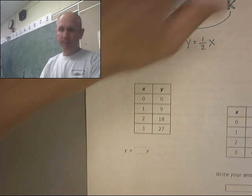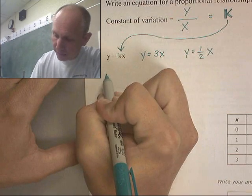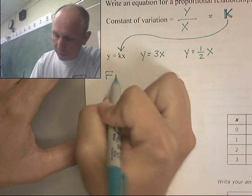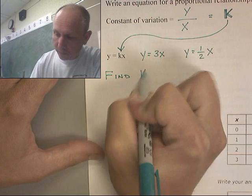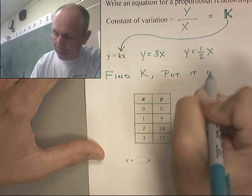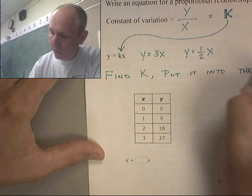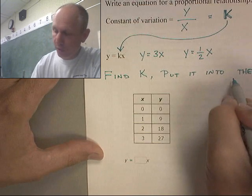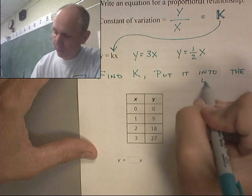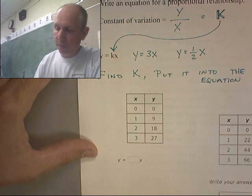So here we go. Let's start with this table. I'm going to start by finding k. Find k and put it into the equation. I'm running out of space right there. All right. Here we go.